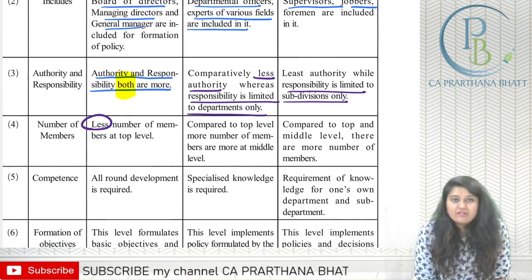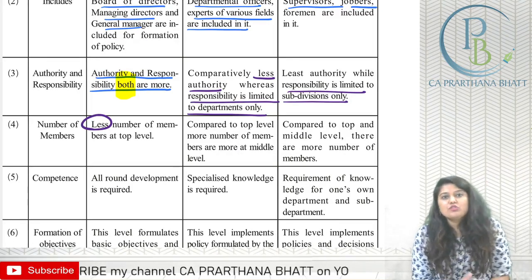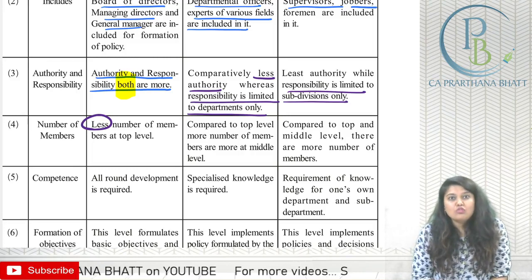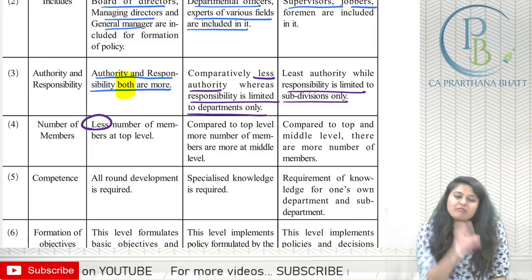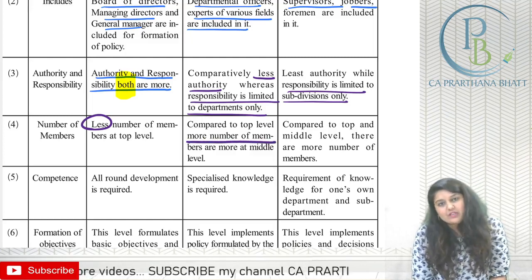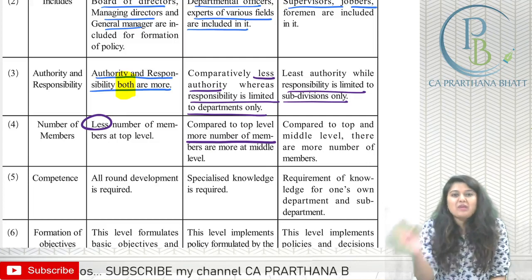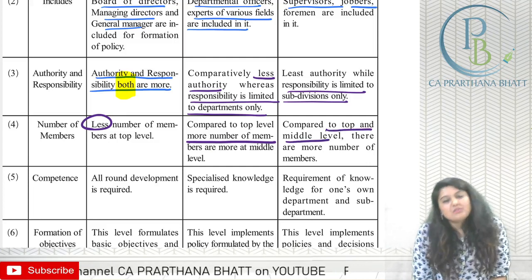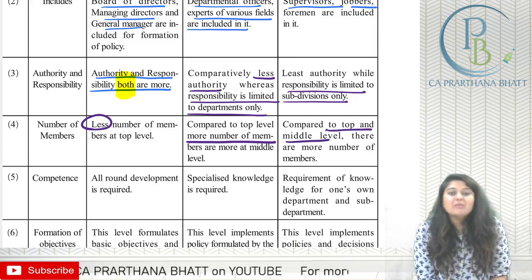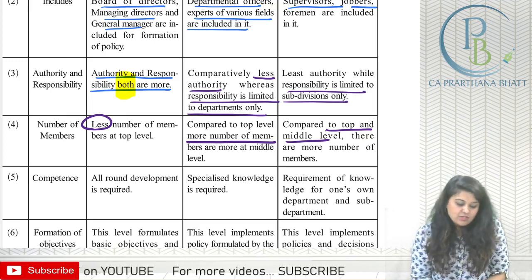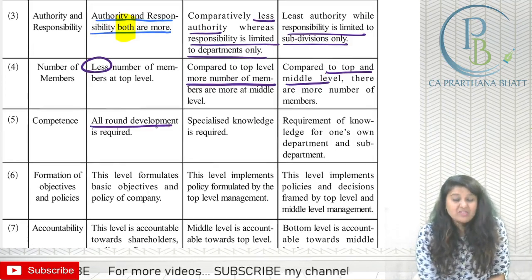Regarding number of members: at top level there are fewer people — maybe 15, 20, 50, or 100 managing the organization. At middle level, the number of members is comparatively higher than top level. At bottom level, the numbers are the highest because the workers working under top and middle management are definitely more.